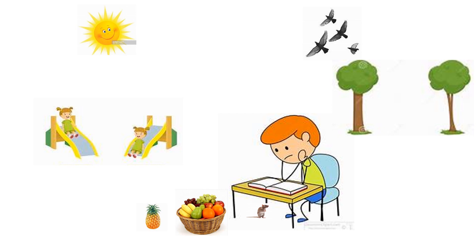Another girl has reached the bottom of the slide. A boy is sitting on a chair. His book is on the table. A rat is under the table. There are fruits inside the basket.